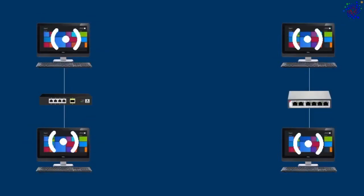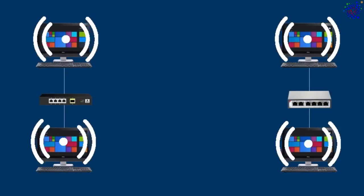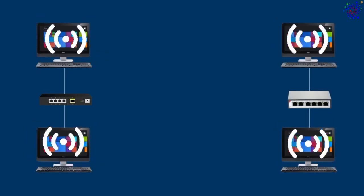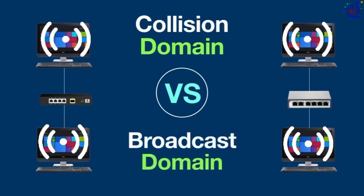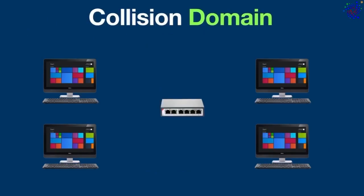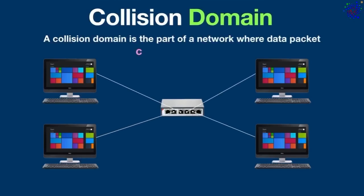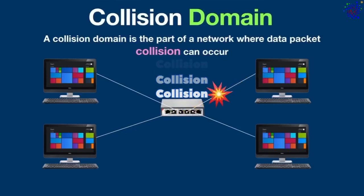Hello everyone, welcome back to another topic. Today in this video we are going to see the difference between collision domain and broadcast domain. A collision domain is the part of a network where data packet collision can occur. A collision happens when two devices on the same network send data packets at the same time, which reduces network performance and efficiency.